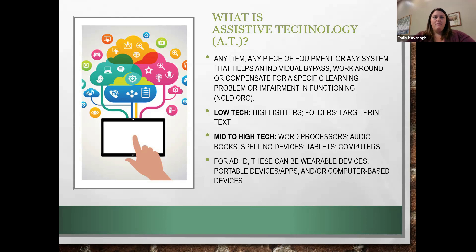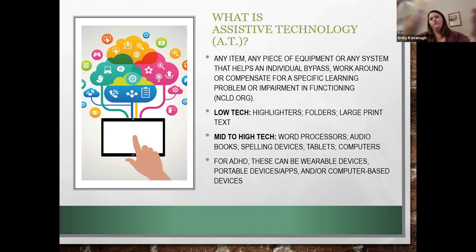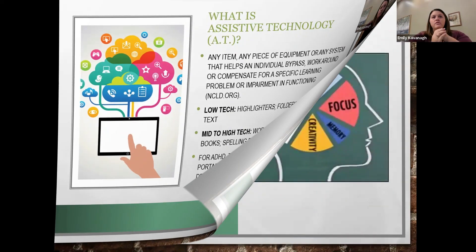On the low-tech end, that might include things like barriers around your desk in school so you're not getting distracted by visuals around you. It could be things like highlighters, certain types of folders, large print text — different accommodations that are low-tech to help support skill weakness areas.